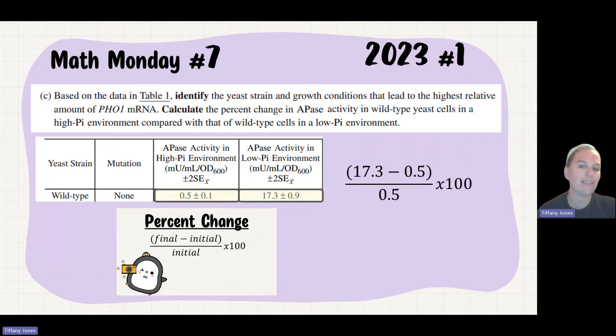If you decided that 17.3 or your low phosphate was your final value and that your high phosphate was your initial, then you'll set this up as 17.3 minus 0.5 divided by 0.5 and you'll multiply that by 100, which gives us a really large value of 3,360 percent.